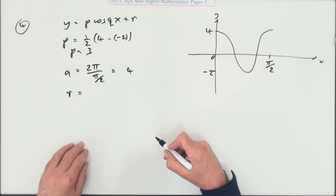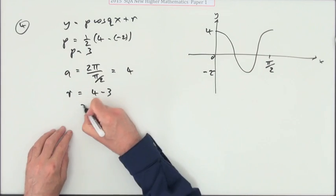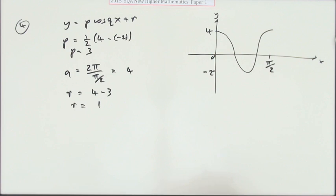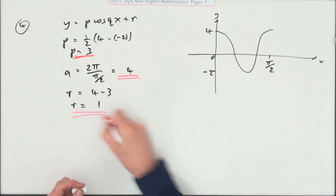And r says has it been shifted up? Well, it's at 4 but the altitude is only 3, so that means it's gone up 1. So there we are: p is 3, q is 4, r is 1.